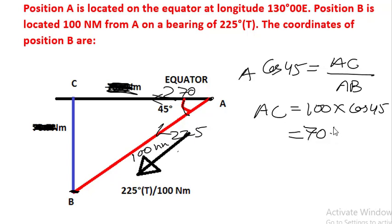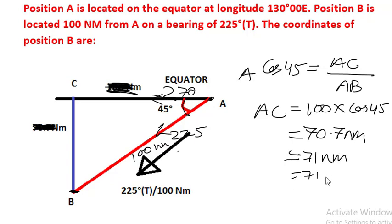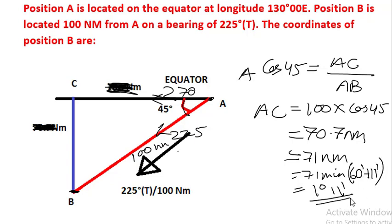That gives us 70.7 nautical miles, which we round off to 71 nautical miles. 71 nautical miles equals 71 minutes, which equals 1 degree 11 minutes — since 60 minutes equals 1 degree, with 11 minutes remaining. The longitude of A was 130 degrees east, and going westward the longitude will reduce.